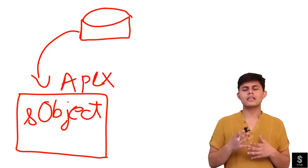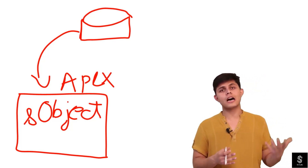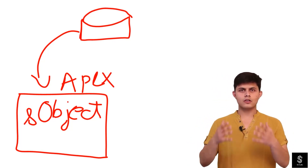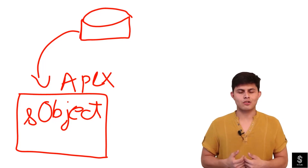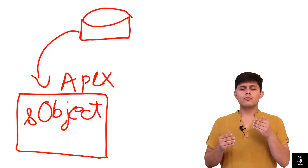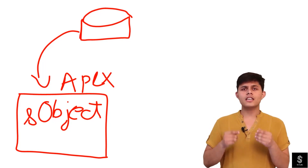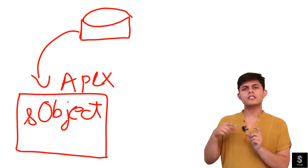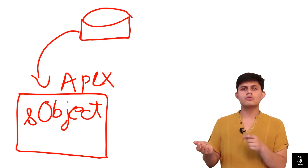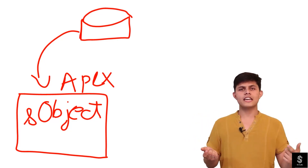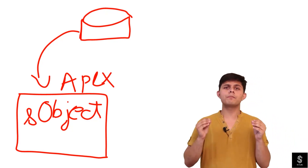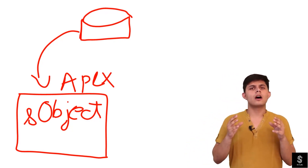So this is exactly what sObjects are. If you want to represent a single record in the Salesforce database, you are going to use the sObject data type. Now let's have a look at how we can create an sObject and how we can use it to do different things in Apex.